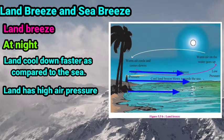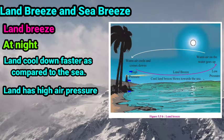Besides this, winds that blow under particular conditions in different areas are also called local winds. For example, foehn, chinook, bora, and loo — all these are local winds.